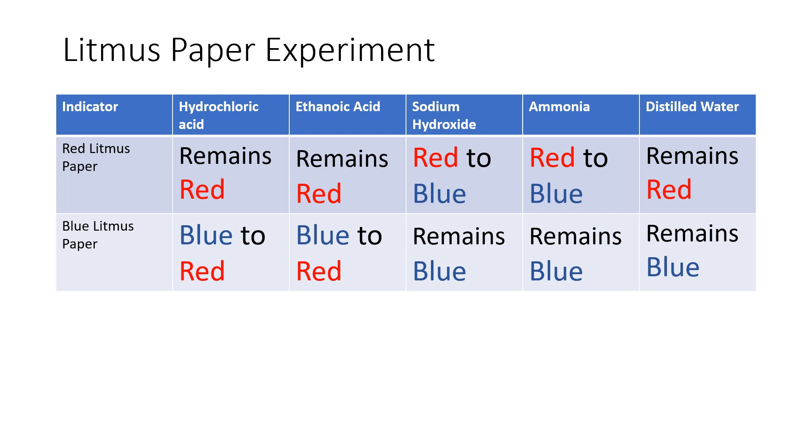Conversely, when we put sodium hydroxide or ammonia on the red litmus paper, they become blue. And when we put them on the blue litmus paper, they remain blue.